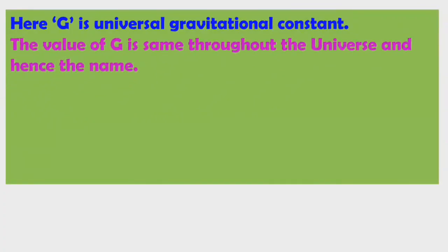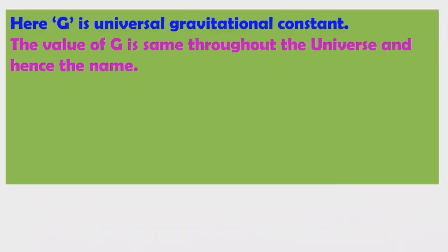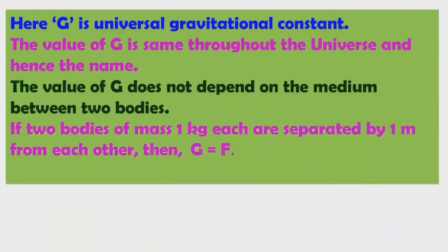The value of the universal gravitational constant G is the same throughout the universe, and hence it is named the universal gravitational constant. Note that small g, the gravity of the earth, varies from place to place. But capital G is the same throughout the universe — that is why it is called the universal gravitational constant. The value of G does not depend on the medium between two bodies.